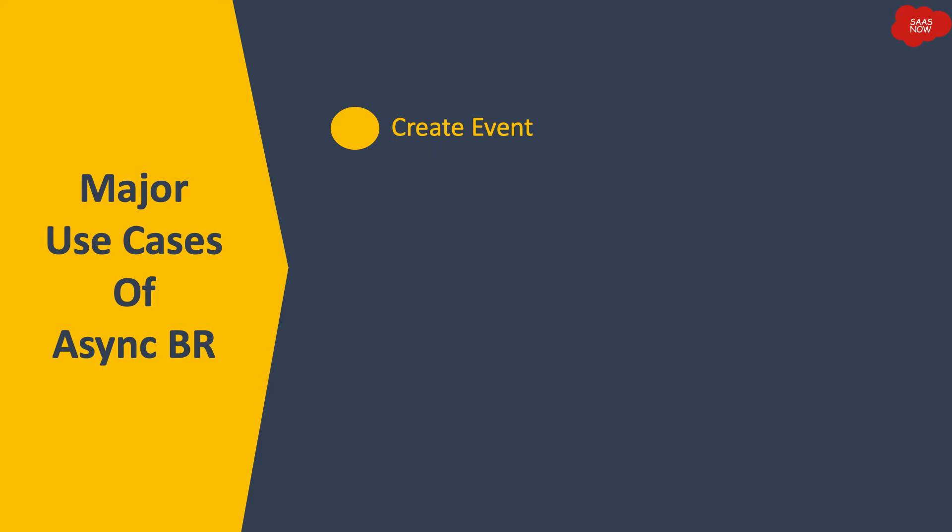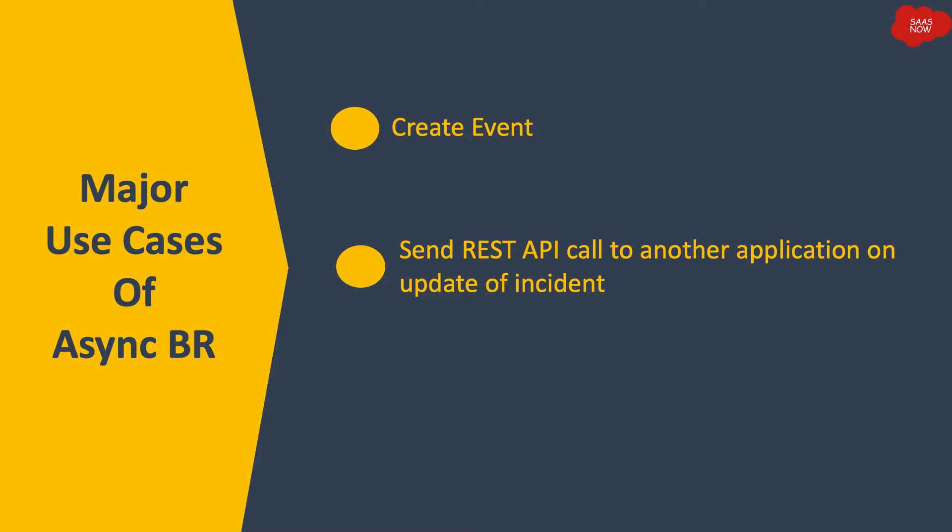The major use cases of async business rules include: first, creating an event. A user takes some action, maybe changing a field, and you want to create an event and send a notification. That notification can wait — the user does not need that value on the form right away. The system can process it with the async business rule, create the event, and send the notification in the background.